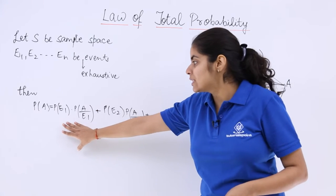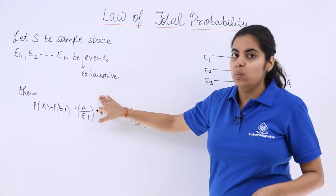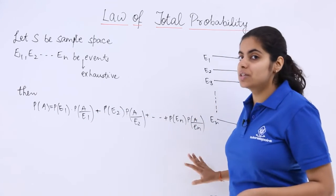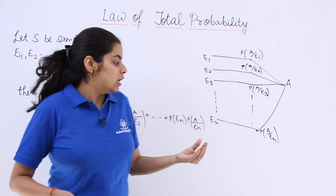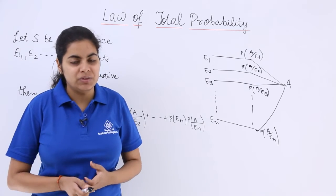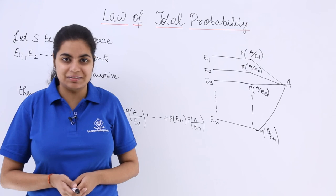So the probability of A can be computed as probability of E1 multiplied by probability of A with respect to E1, and so on up till probability of EN multiplied by probability of A with respect to EN. If this is still not clear, we will see questions based on it and this will definitely be all clear.